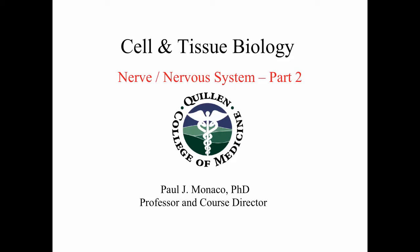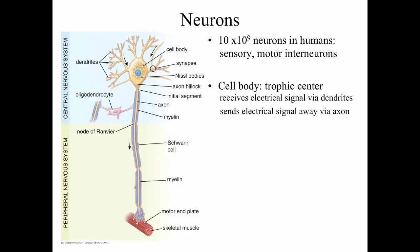This is our second podcast in our series on nerve tissue and the nervous system. There are a very large number of neurons in humans, something like maybe a billion to ten billion neurons, and these of course can be sensory neurons, motor neurons, or interneurons.